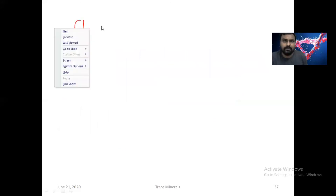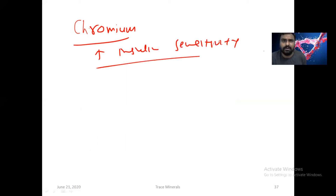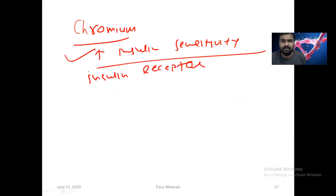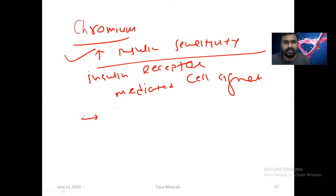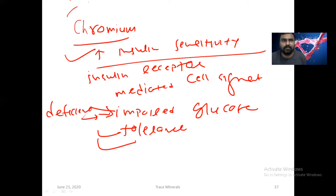Now coming to chromium. Chromium increases insulin sensitivity. It has a role in insulin receptor-mediated signaling. Chromium deficiency leads to impaired glucose tolerance.